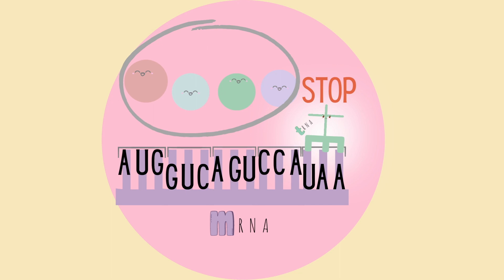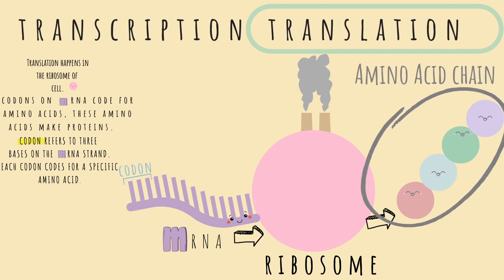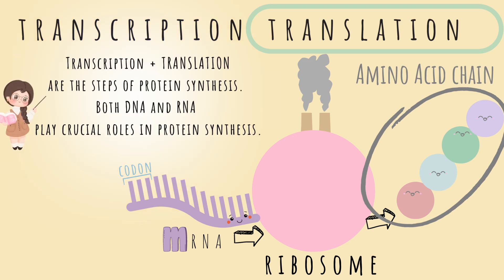Let's take a step back and look at the big picture. The result is an amino acid chain leaving the ribosome, which will eventually become a protein, created with the help of tRNA and mRNA. rRNA basically just makes the structure of the ribosome. To summarize, transcription and translation are the steps of protein synthesis, and both DNA and RNA play crucial roles in protein synthesis.